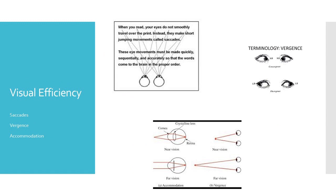So let's quickly review what visual efficiency skills are. They include ocular motor skills like saccades and pursuits. They look at vergence, including convergence — looking near — and divergence — looking far — and accommodation, which involves your lens changing shape based on where you're looking.